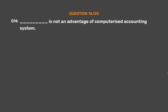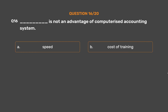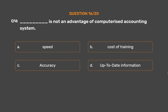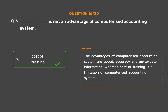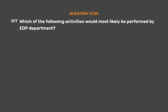Question number 16. Underscore is not an advantage of computerized accounting system. Option A: Speed. Option B: Cost of training. Option C: Accuracy. Option D: Up-to-date information. The correct answer is Option B — Cost of training. The advantages of computerized accounting system are speed, accuracy, and up-to-date information, whereas cost of training is a limitation of computerized accounting system.